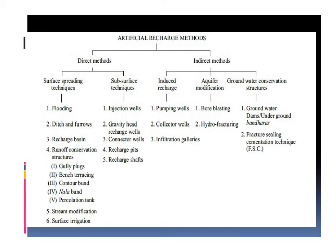This figure shows the flowchart of artificial recharge methods. The methods may be direct methods and indirect methods. The direct method consists of surface spreading techniques and subsurface spreading techniques. The surface spreading techniques consist of flooding, ditch and furrows methods, recharge basin methods, and runoff conservation structures like the use of gully plugs, bench terracing, contour bunds, nala bunds, and percolation tanks. The next method of surface spreading technique is stream modification and surface irrigation.